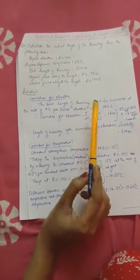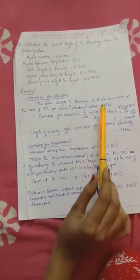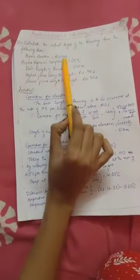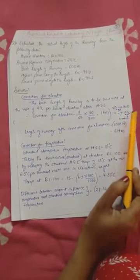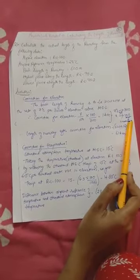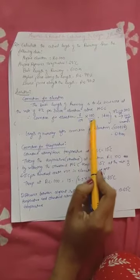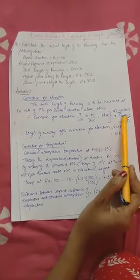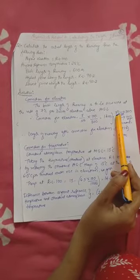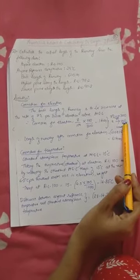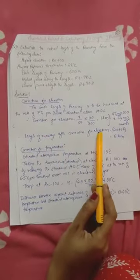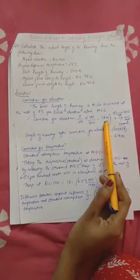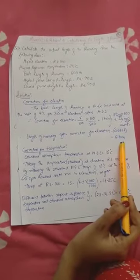Our first correction is for elevation. The basic runway length is increased at the rate of 7% per 300 m above MSL. For 100 m rise, by interpolation: (7/100) × (100/3) = 14 m correction. So length of runway after correction for elevation = 600 + 14 = 614 m.